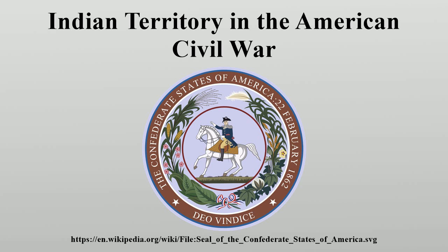After winning the Battle of Honey Springs, Blunt returned to Fort Gibson, where he learned that the Confederates had regrouped at the town of Perryville, where they had established a major supply depot. Blunt reassembled the force and led them to Perryville. Arriving there on August 23, 1863, he found that the Confederate commanders Cooper and Watie had already left for Boggy Depot. Only a small rearguard, commanded by Brigadier General William Steele, remained at Perryville. The Union forces quickly scattered the Confederates. Blunt secured all supplies he could use and burned the rest, along with the town. Instead of following the retreating Confederates southwest toward Boggy Depot, Blunt proceeded to attack Fort Smith, which he captured on September 1, 1863.